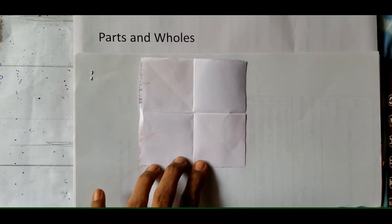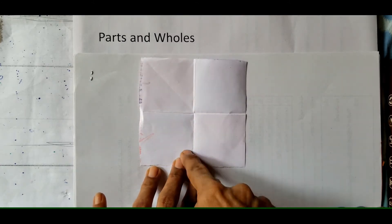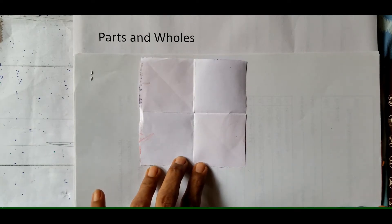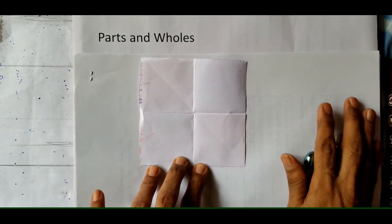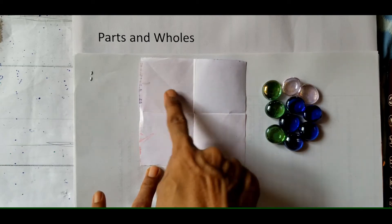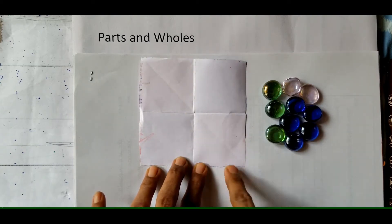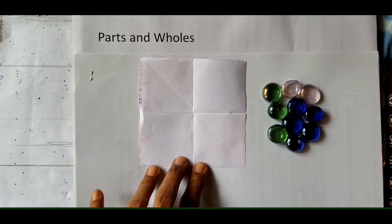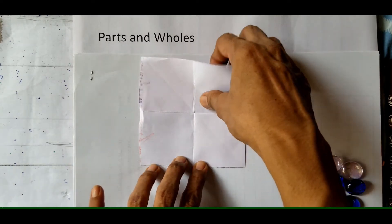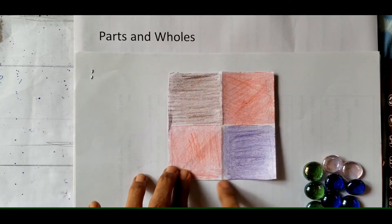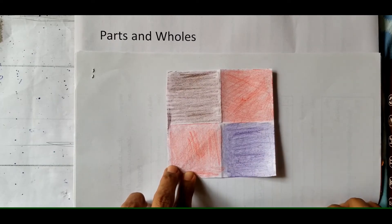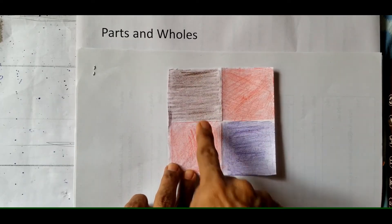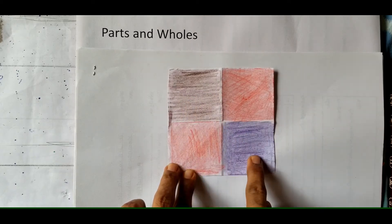Shall we start the revision of Parts and Holes? What are Parts and Holes? When a whole object is divided into parts. And what are fractions? A fraction represents equal parts of a whole or a collection. The parts should be equal. First let us see what is a fraction of a whole. I have got a sheet of paper and I have divided this sheet of paper into four equal parts. Two portions are colored red.